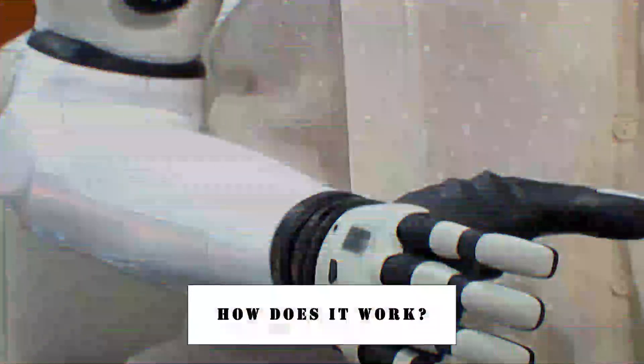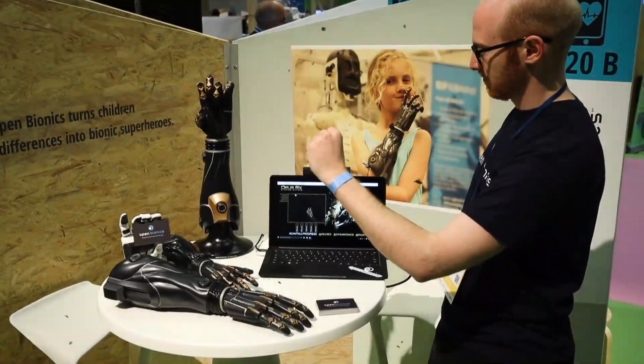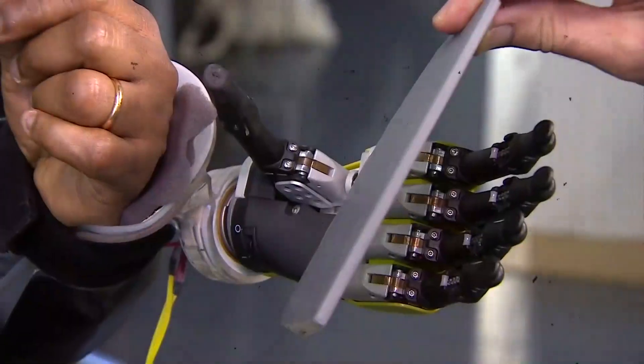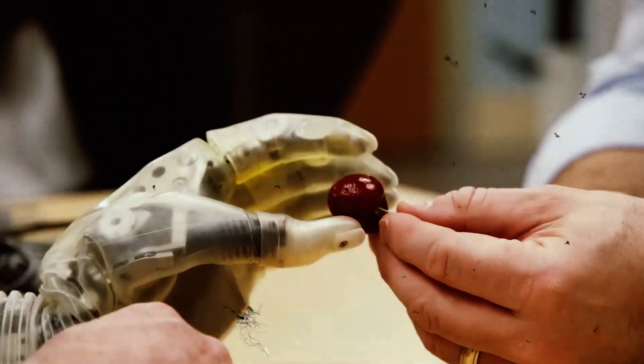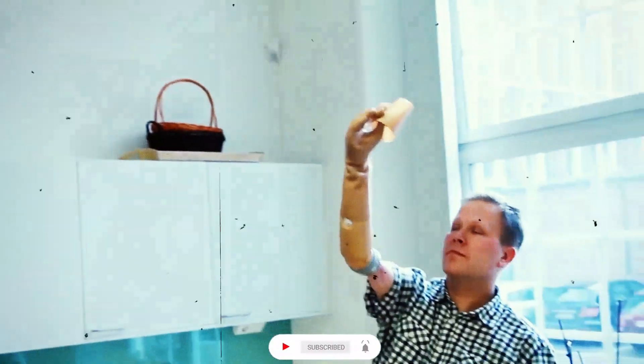How does it work? An individual must first have electrodes implanted into the remaining muscles of their amputated limb through surgery. The electrical impulses produced by the brain when a person considers moving a missing limb are recorded by these devices.